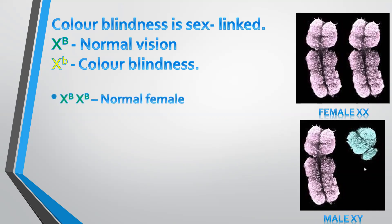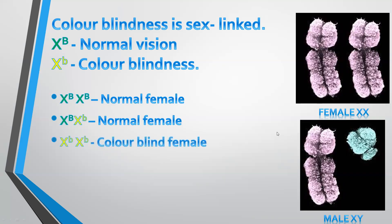There are three possible genotypes for females and only two for males. A female can inherit normal vision from both parents and be homozygous with normal vision. Or if she inherits the allele for normal vision from one parent and colorblindness from another, since normal vision is dominant, she'd still have normal vision. But if she has colorblindness, she had to inherit both recessive alleles, one from each parent.